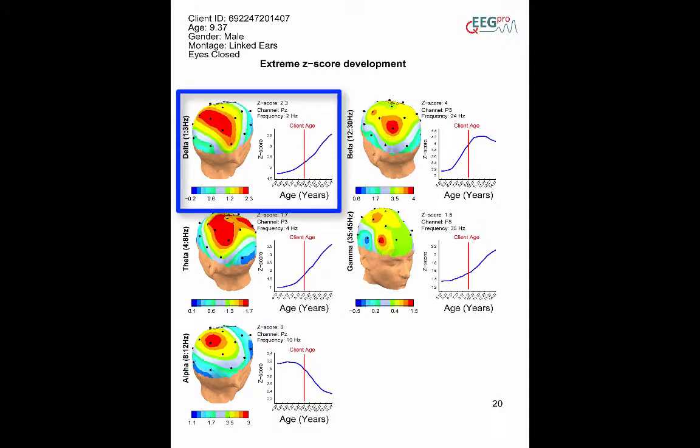Let's focus on the upper left corner of the example page. Here we see a three-dimensional plot which shows the most extreme z-score within the delta band. In this example, the most extreme z-score within the delta band is 2.3 at channel pz at 2 Hz.